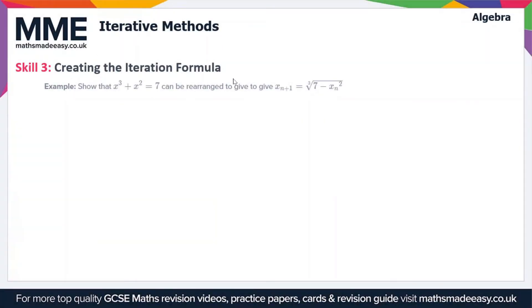There's another skill regarding the use of iteration formulas or iteration machines and that's to actually create the machine itself. In this example we've got to show that x cubed plus x squared equals 7 can be rearranged to give xn plus 1 is equal to the cube root of 7 minus xn squared.